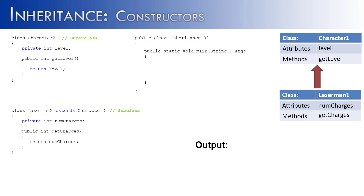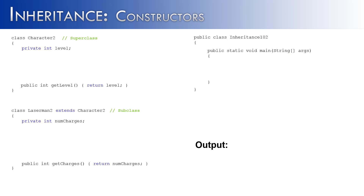An important part of inheritance is understanding how the classes interact with one another. If you're going to have multiple classes interacting with one another, one thing that must be understood is how the constructors of the different classes are going to function. So let's say that I was writing a program where I had a character named Laserman, and Laserman is a character, so it can use the features of the character class. What I want to show now is how constructors play into the inherited relationship between Laserman and character.